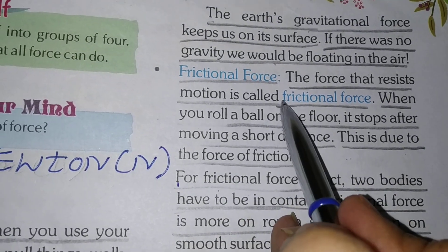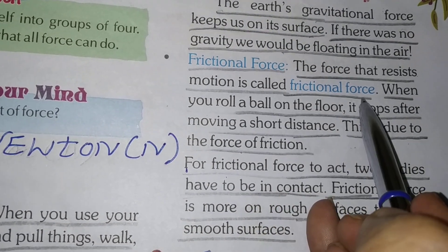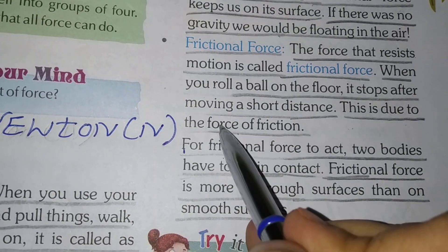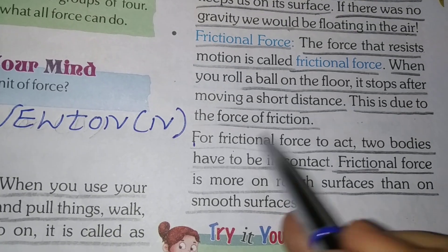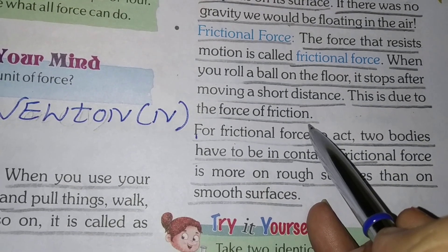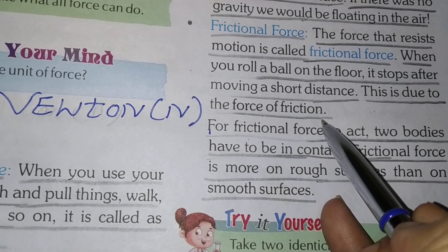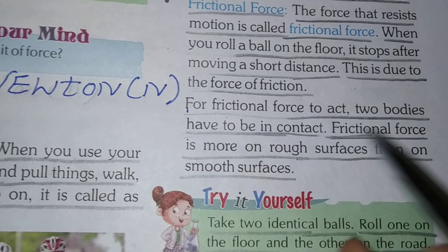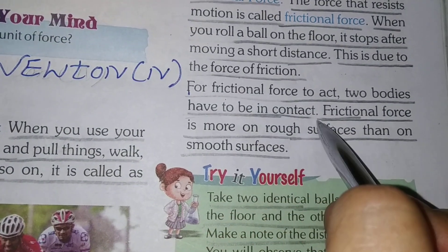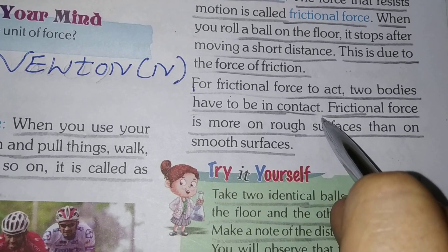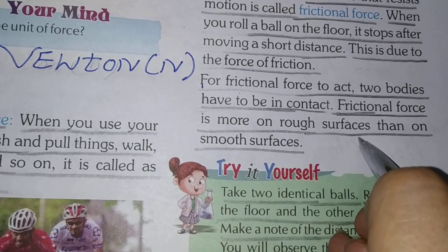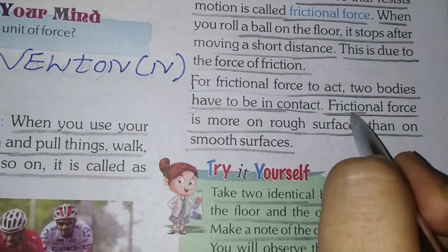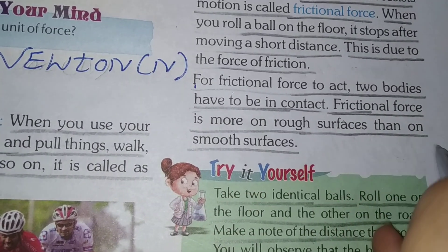Frictional force. The force that resists motion is called frictional force. When you roll a ball on the floor, it stops after moving a short distance — this is due to the force of friction. For frictional force to act, two bodies have to be in contact. Frictional force is more on a rough surface than on a smooth surface.